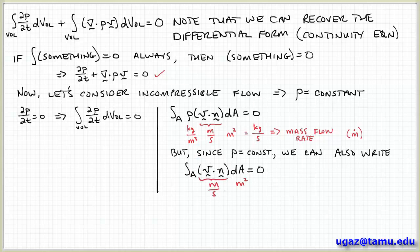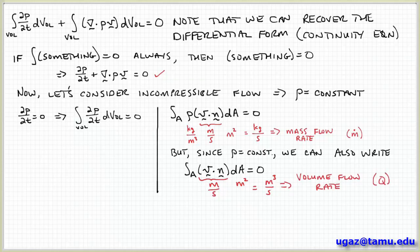So we have the integral over the surface of v dot n dA. Again, if we look at the units, we have velocity meters per second times area meters squared. So this has units of volume per time. So this is a volume flow rate. And we usually denote that as q. Mass flow rate we usually denote as m dot.